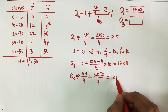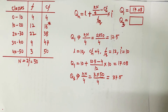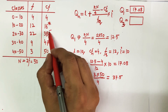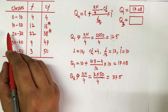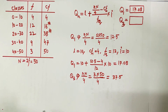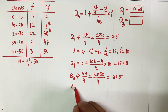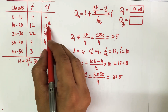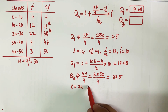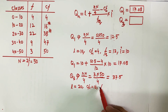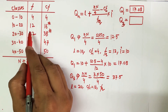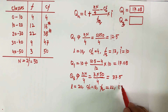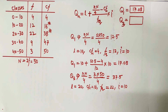I compare 37.5 with the cumulative frequencies. Cumulative frequency 4 is less, 16 is less, 38 exceeds — so the class 20 to 30 becomes my third quartile class. The lower limit L is 20, the cumulative frequency of the previous class is 16, and the frequency of the quartile class is 22.